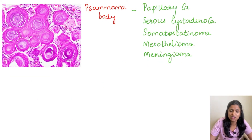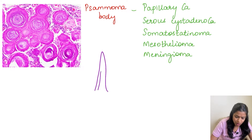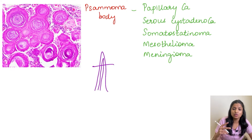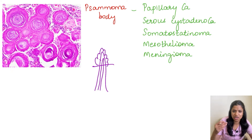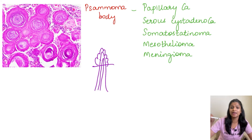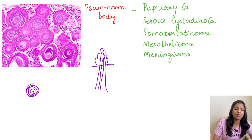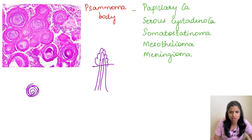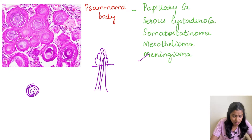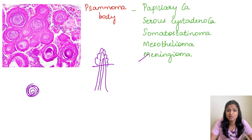The next important example of dystrophic calcification is a psammoma body, seen in papillary tumors. In a papillary tumor there is a fibrovascular core in the center; if this is cut off, necrosis occurs at the tip of the papilla. The necrotic cells then accumulate calcium in a lamellated appearance — these lamellated calcium deposits are psammoma bodies. Examples include papillary carcinoma of the ovary, papillary carcinoma of the thyroid, papillary meningioma, somatostatinoma, and mesothelioma.